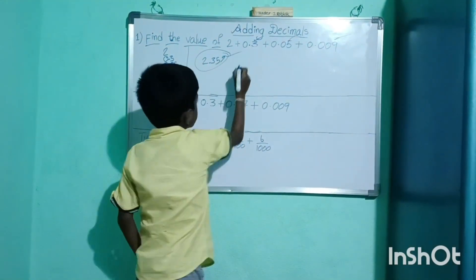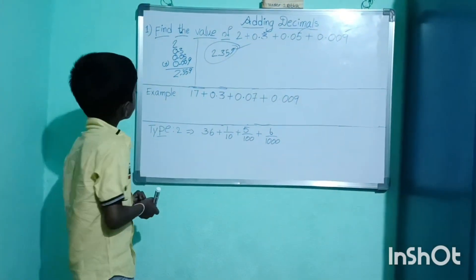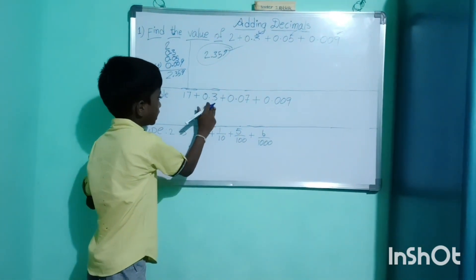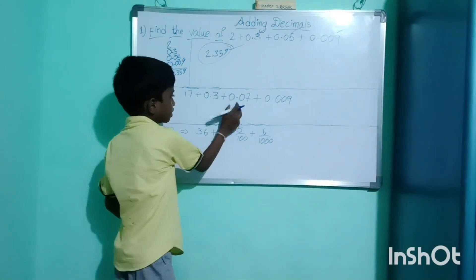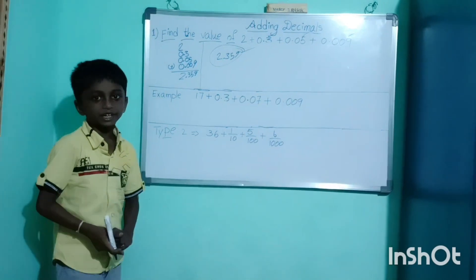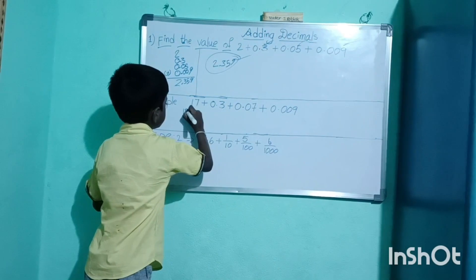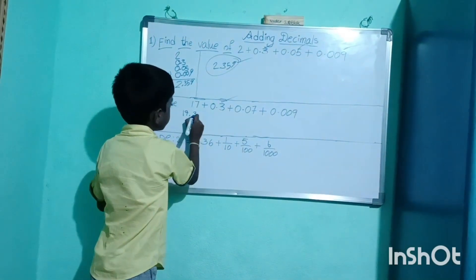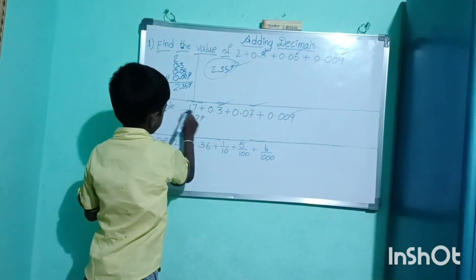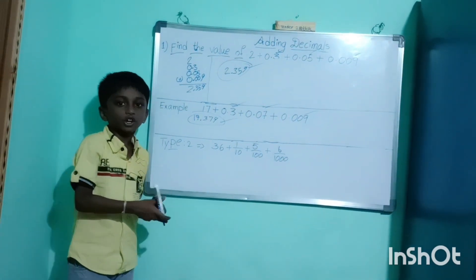We follow this smart process. We get answer so easily. Next example is 17 plus 0.3 plus 0.07 plus 0.009. We directly follow the smart process. 17.379. We follow this process and get the answer easily.